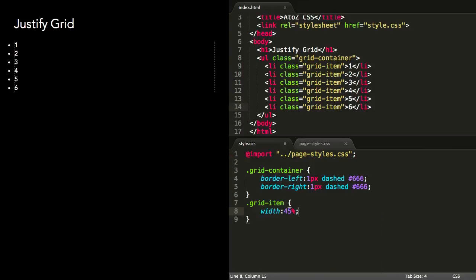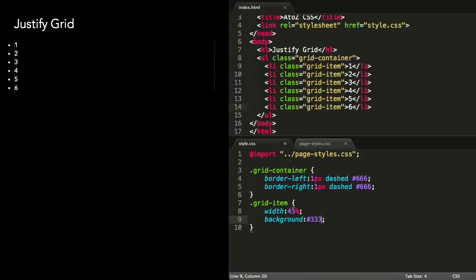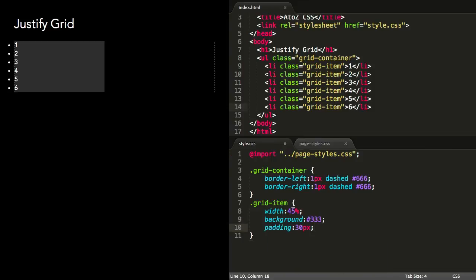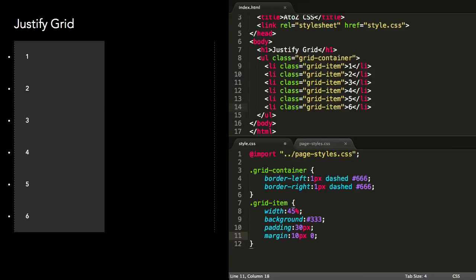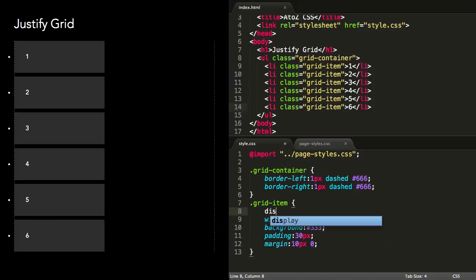I'll add a width, a background colour, and some padding to the list items to space them out a bit. I'll also set them to display inline block, which is required for them to be justified.